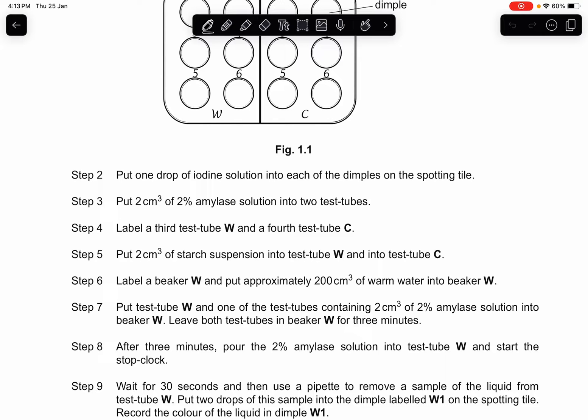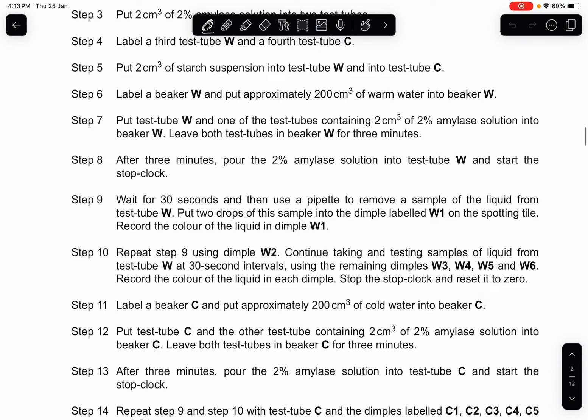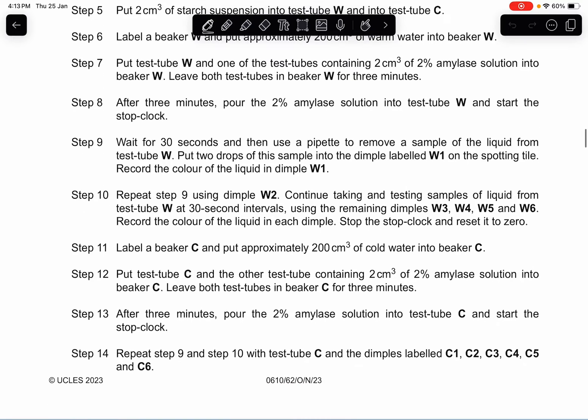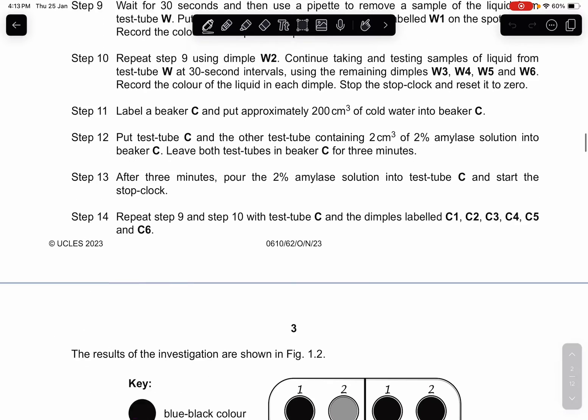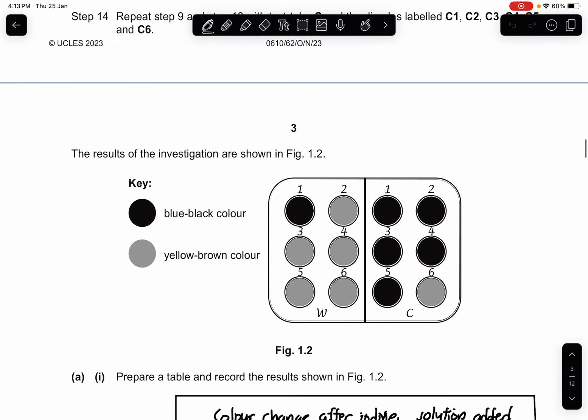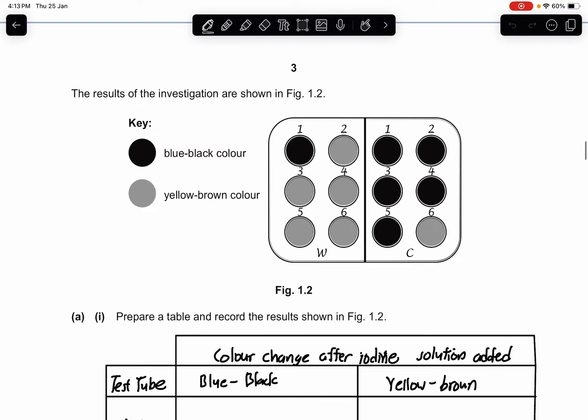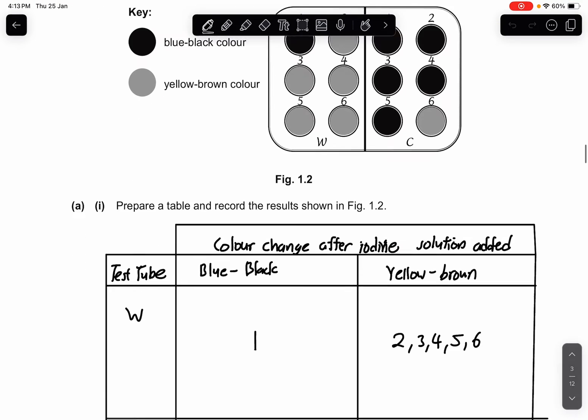Step 8, after 3 minutes, pour the 2% amylase solution into test tube W and start the stopwatch. The rest of it asks you to add into two different kinds of dimples. The results of the investigation are shown in figure 1.2, where the key is blue-black color and the lighter color is yellow-brown color.